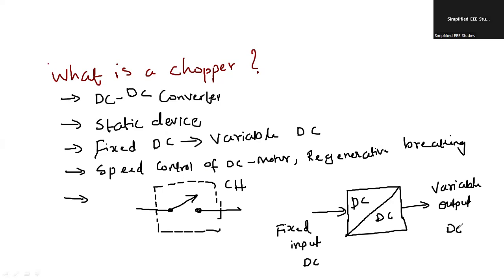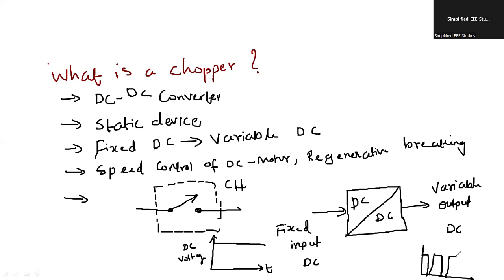When I talk about the waveforms: the x-axis is time and the y-axis is DC voltage magnitude. The amplitude remains the same, but you can see the time period — that is, the width — is getting varied. We can control the width by changing the duty cycle.